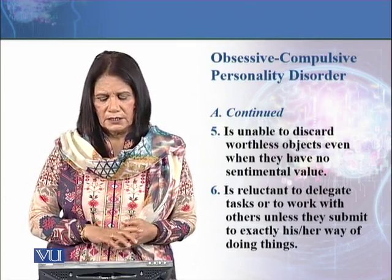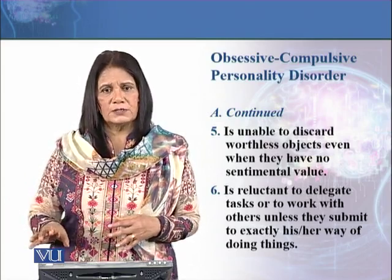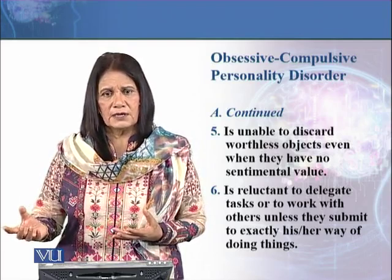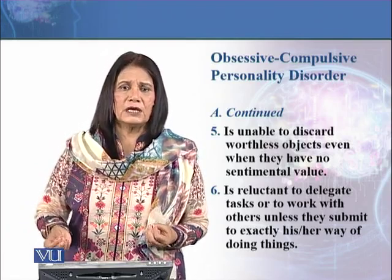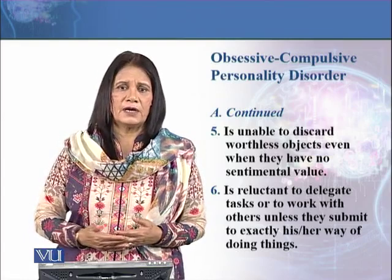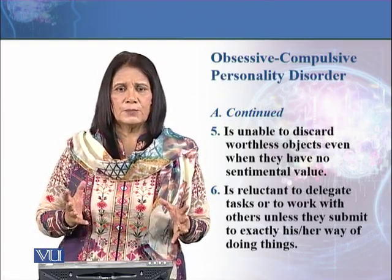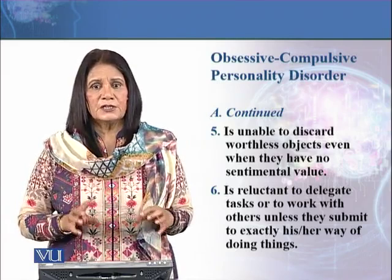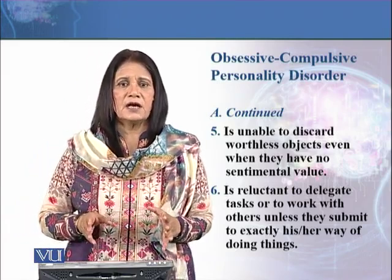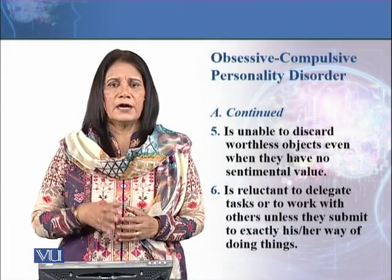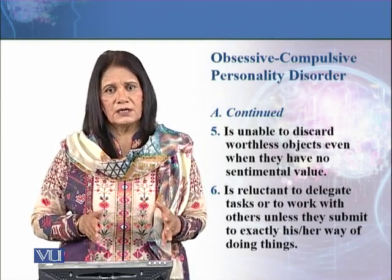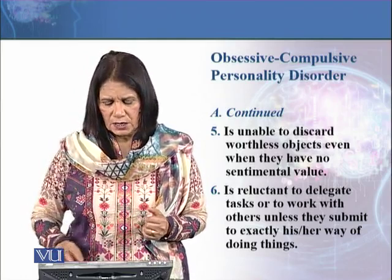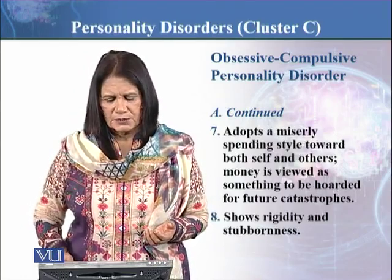Sixth: he or she is reluctant to delegate tasks or work to others۔ اگر وہ team leader ہیں تو دوسروں کو کام delegate کرنے میں reluctant ہوں گے، unless دوسرے لوگ انہیں assurance دیں کہ ہم اسی طرح کام کریں گے جس طرح آپ چاہتے ہیں — کیونکہ ان کے اندر perfectionism ہوتی ہے، meticulous طریقے سے کرنا چاہتے ہیں۔ جب تک assurance نہیں ملتی، وہ خود کام کرتے رہتے ہیں، جس کی وجہ سے delay بھی ہوتا ہے اور timelines بھی meet نہیں ہوتیں۔